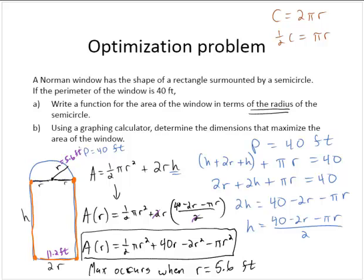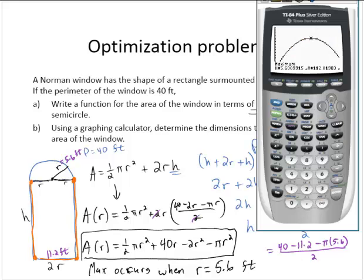And then the height, the height is 40 minus 2r. So that's minus 11.2 minus πr, so π times 5.6. And divide that whole thing by 2. 40 minus 11.2 minus π times 5.6, divided by 2. The height would actually be 5.6 as well.